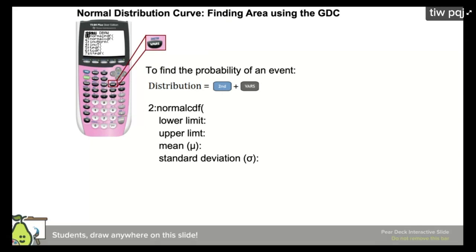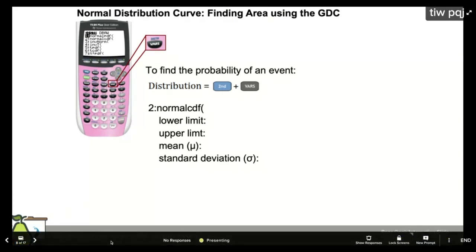So now this is the calculator part. To calculate any probability on that curve, we're using something called normal CDF. And when you type normal CDF in, they're going to ask for the lower limit, upper limit, mean, standard deviation. And I'll show you exactly what we mean on the next slide in our example.